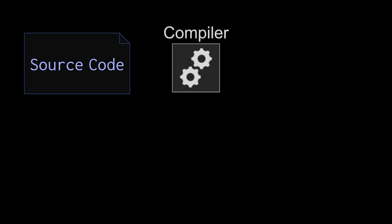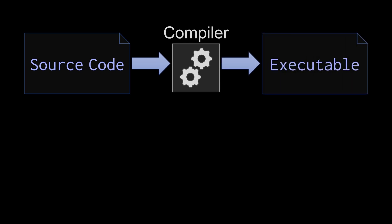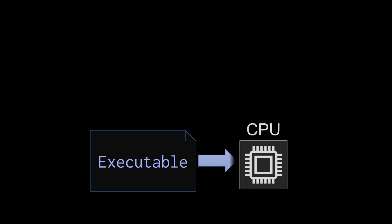C++ is different. It's a compiled language, which means there's a process called compilation that will take your source code and convert it into something that the CPU can execute before you ever run it. The result of compilation is an executable. There's a hidden step in there called linking, but that's a topic for a future video. The executable is a concise set of data and machine instructions — the base set of instructions that a CPU can execute — and it will run quickly and efficiently directly on the CPU.